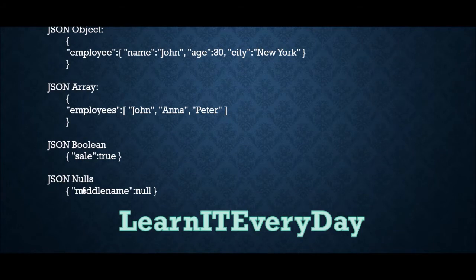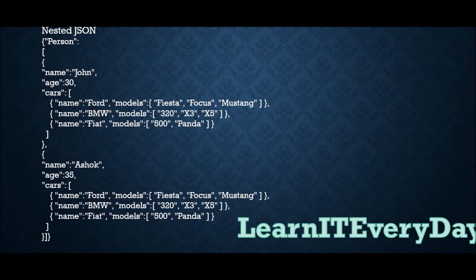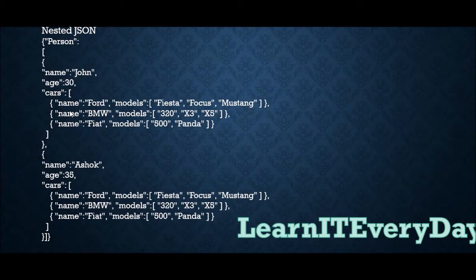Here is a simple example of a simple JSON — you can see three different attributes: name, attribute one, and attribute two, with their respective values. For the nested JSON example, inside 'person' you have an array, and each element of the array is a JSON object. Within that object, under 'car', another JSON is embedded — that is what makes it a nested JSON.